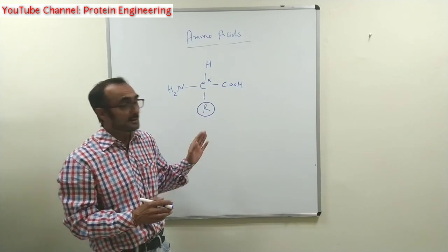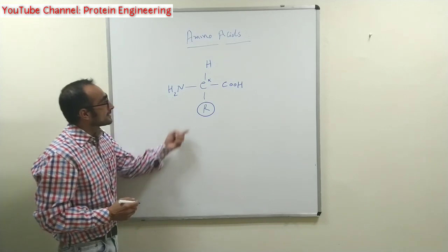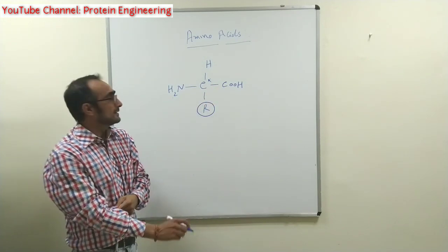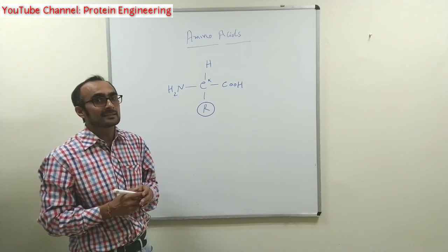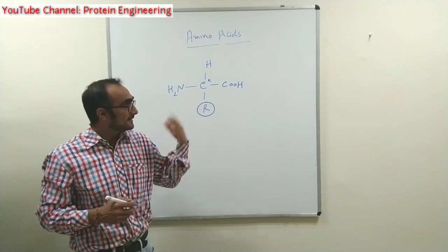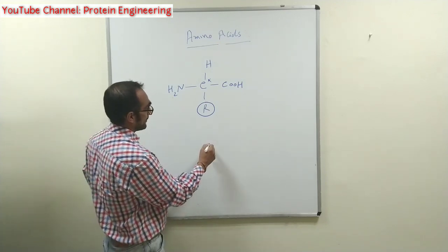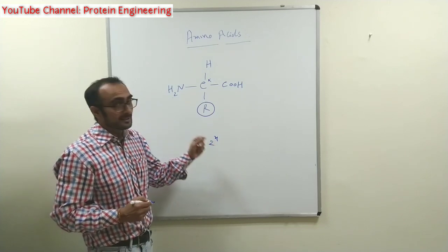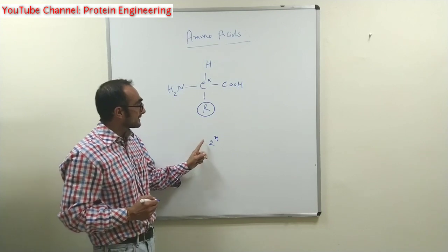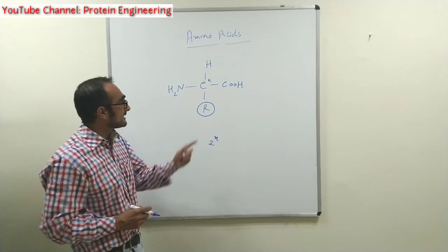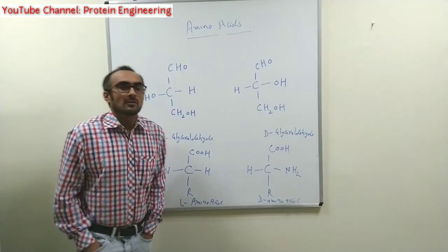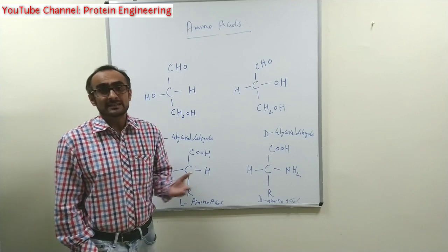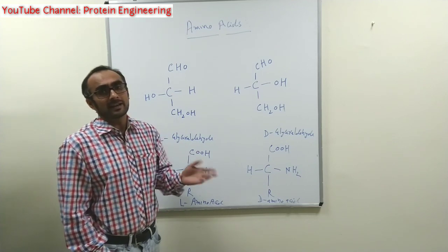The alpha carbon has four valences satisfied by four different groups, making it a chiral center. When a compound has a chiral center it may exist in two stereoisomeric forms, and the number of stereoisomers depends on 2^n, where n is the number of chiral carbon centers. Every amino acid except glycine has at least one chiral carbon atom, meaning it can exist in two stereoisomeric forms. Because amino acids have a chiral carbon they can rotate plane-polarized light to the left or right.